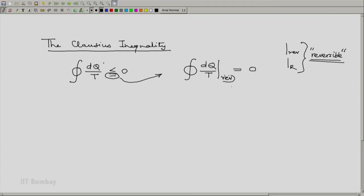Now notice that this cyclic integral of this quantity dq by t is true for any reversible cycle, this equality for the Clausius inequality. Now since it is true for any reversible cycle, calculus tells us that this implies that dq by t for a reversible process element must be an exact differential.